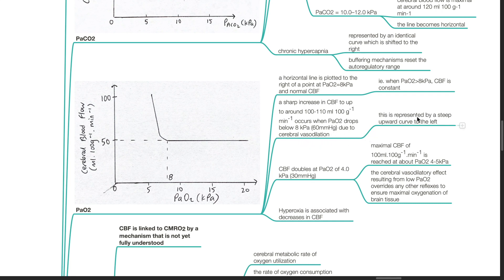This is represented by a steep upward curve to the left. CBF doubles at PaO2 of 4 kPa or 30 mmHg. Maximal CBF of 100 mL per 100 g per minute is reached at about PaO2 of 4 to 5 kPa. The cerebral vessel dilatory effect resulting from low PaO2 overrides any other reflexes to ensure maximal oxygenation of brain tissue. Hyperoxia is associated with decreases in CBF.